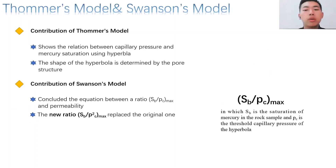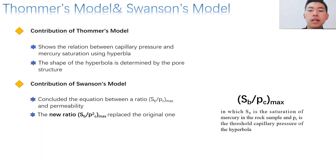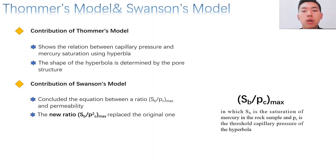Secondly, let's talk about Swanson's model and Pitman's model — I merge these two in one part because they are related. Swanson studied a log-log plot and used a hyperbola to show the relationship between capillary pressure and mercury saturation. Based on this, Swanson concluded an equation related to the ratio on the slide and permeability. The ratio contains two parameters: Sb and Pc, in which Sb is mercury saturation and Pc is the threshold capillary pressure of the hyperbola. This equation was then revised by Chinese scholar Li Jianming, who replaced the original ratio with a new ratio where Pc is changed to the square of Pc. The new ratio is more sensitive to changes in permeability.